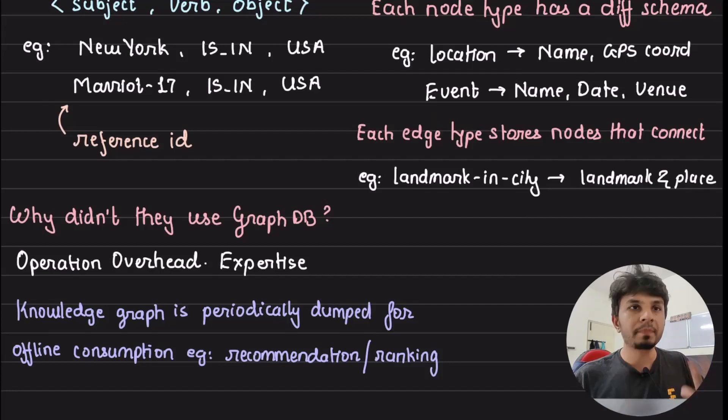And the knowledge graph that they have needs to be periodically dumped for offline consumption. For example, I don't have to always query the knowledge graph to get some information. For example, let's say if I want to do some search engine ranking or if I want to run some recommendation, so instead of, for everything, firing query to knowledge graph would be too expensive because it would put unnecessary load onto your knowledge graph.